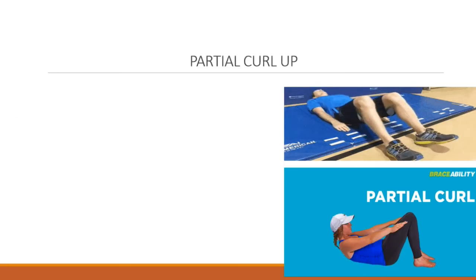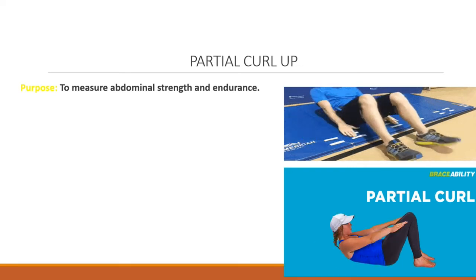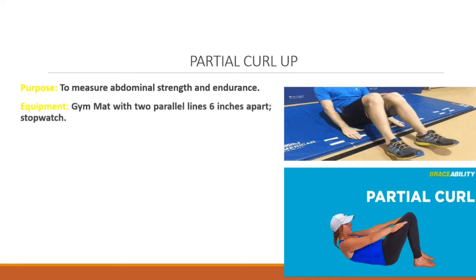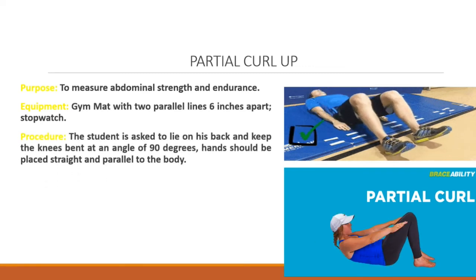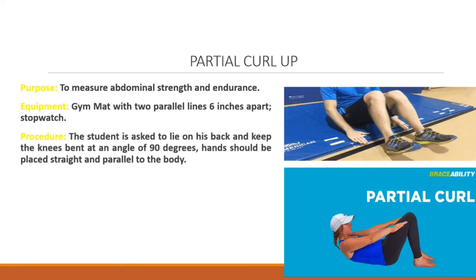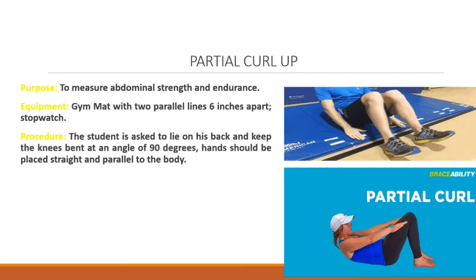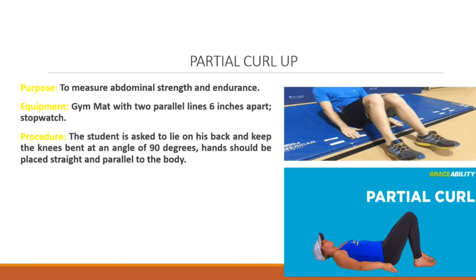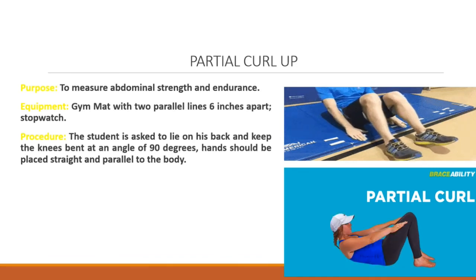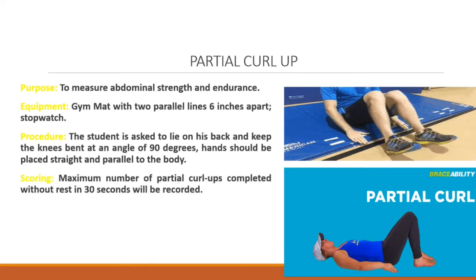Partial Curl Up. Purpose: To measure abdominal strength and endurance. Equipment: Gym mat with 2 parallel lines 6 inches apart, stopwatch. Procedure: The student is asked to lie on his back and keep the knees bent at an angle of 90 degrees. Hands should be placed straight and parallel to the body. Scoring: Maximum number of partial curl ups completed without rest in 30 seconds will be recorded.